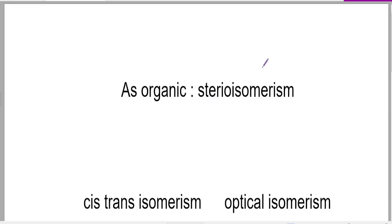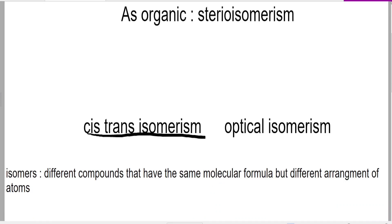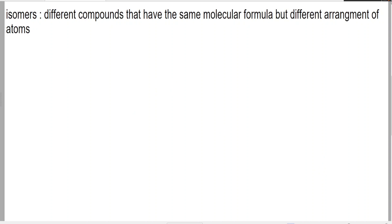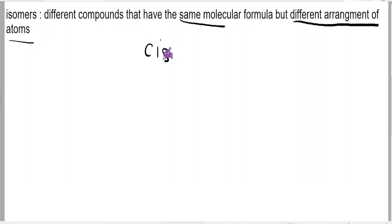Hey guys, this is AS Organic and we're doing cis-trans isomerism in this video. Cis-trans isomerism is a form of stereoisomerism, and there are two types of stereoisomerism you need to know: cis-trans isomerism and optical isomerism. To understand cis-trans isomerism, let's go back to the definition of isomerism — when you have different compounds that have the same molecular formula but different arrangement of atoms.